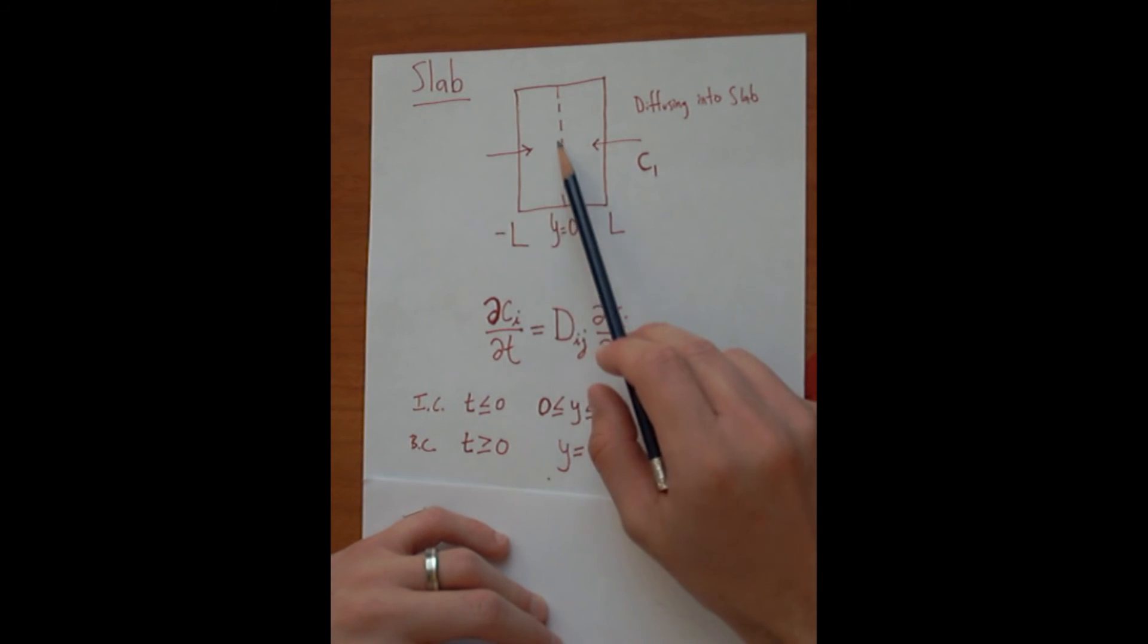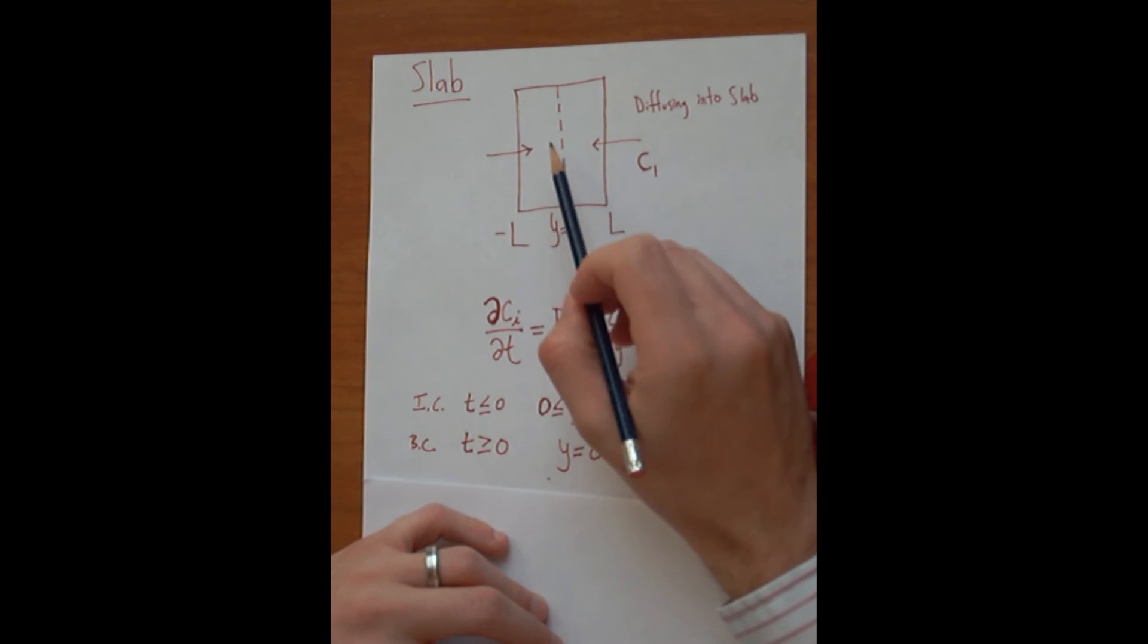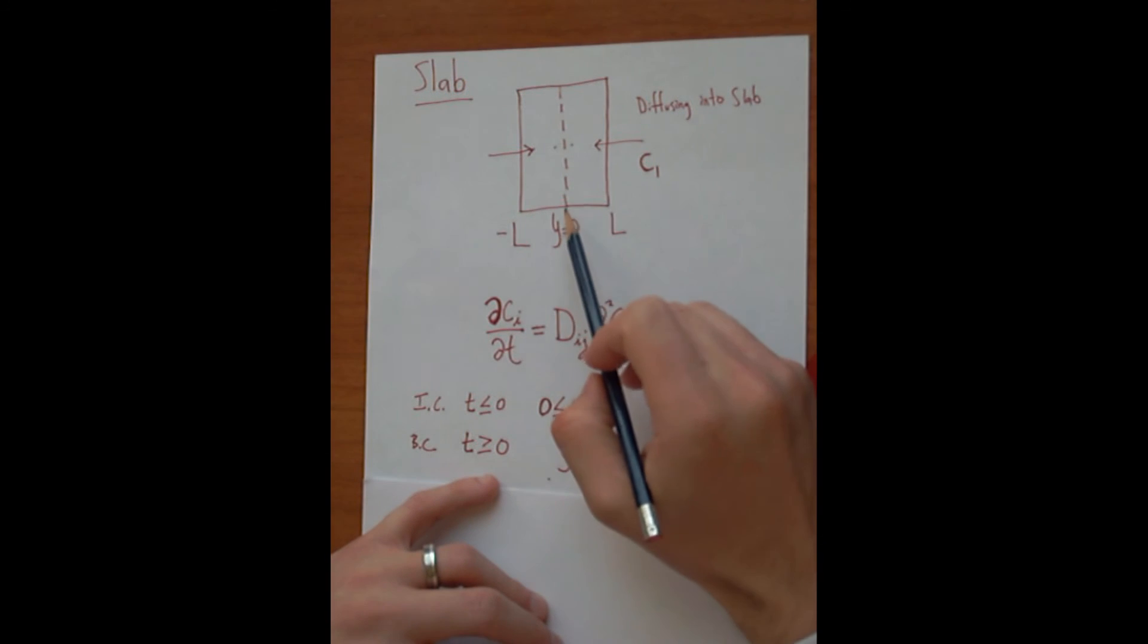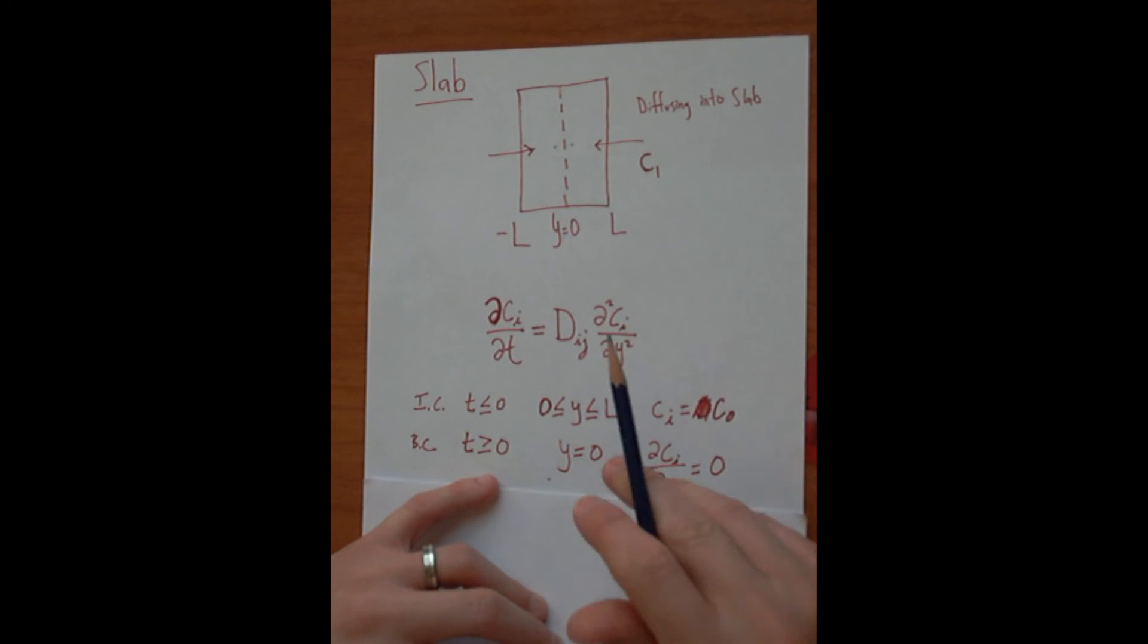at this point right here, you have diffusion happening in both directions. So any time here, the concentration at this point right here will equal the concentration at this point here. So dC divided by dY should always be equal to zero right along this line here due to the symmetry of the geometry.